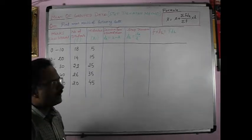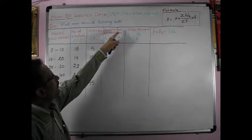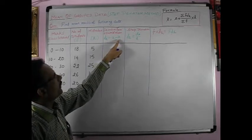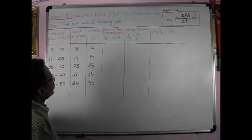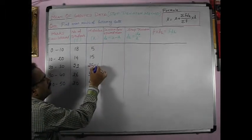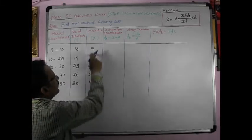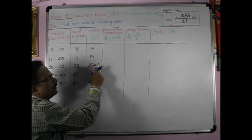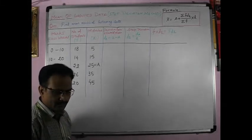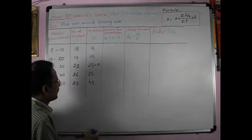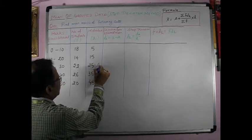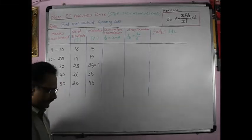Now, we have to find out the deviation from assumed mean. It means dA = x - A. So, we have to find out what. Here is A. A, we can take the mid-value. It would be better for us if we take the mid-value. So, 25 is equal to A. We are taking A, 25. Okay? This is A.